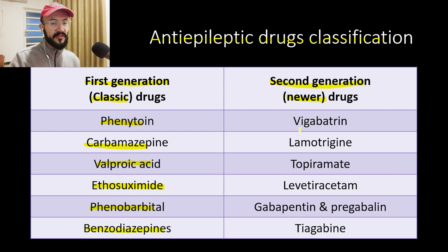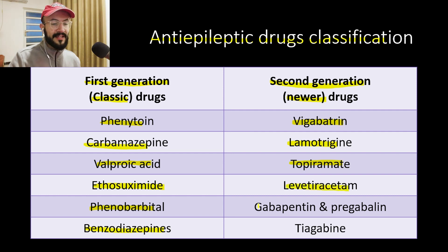Examples of the second generation include vigabatrin, lamotrigine, topiramate, levetiracetam, gabapentin, pregabalin, and tiagabine.